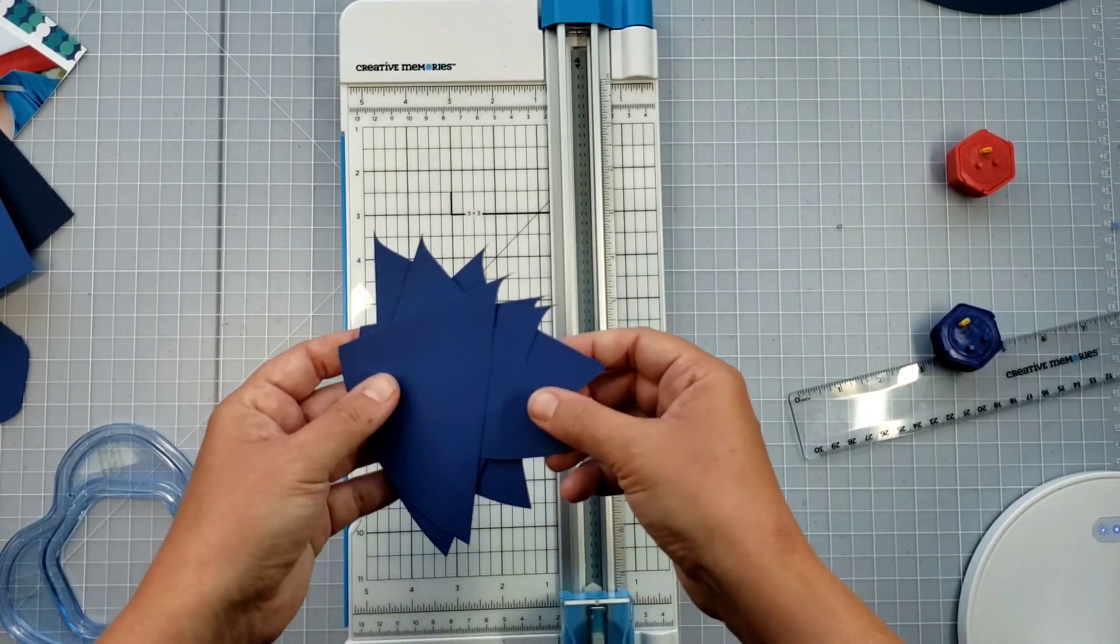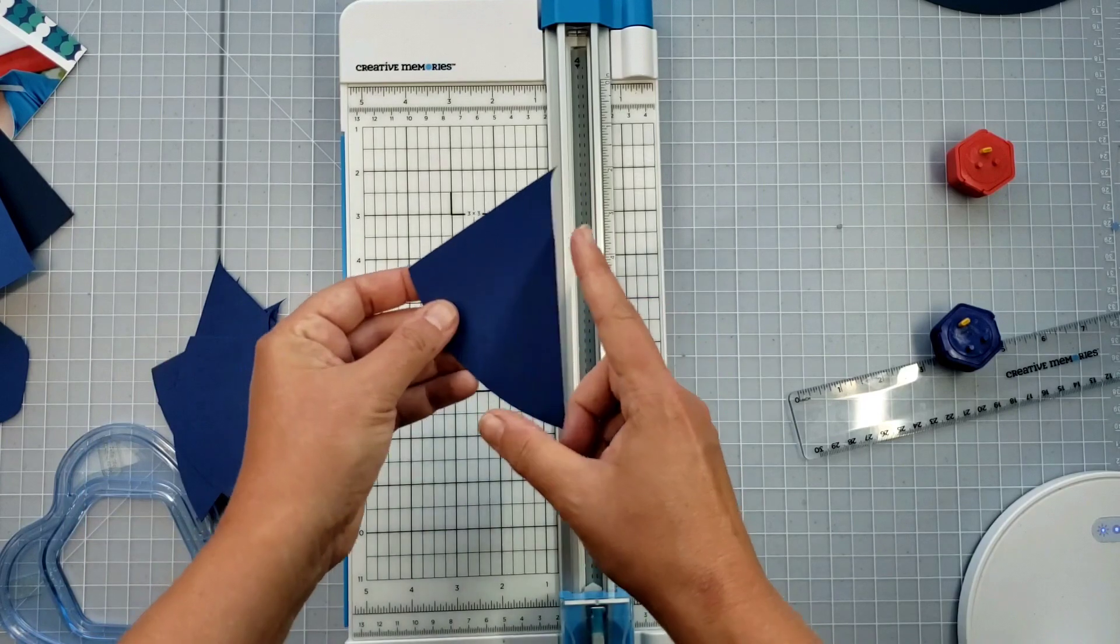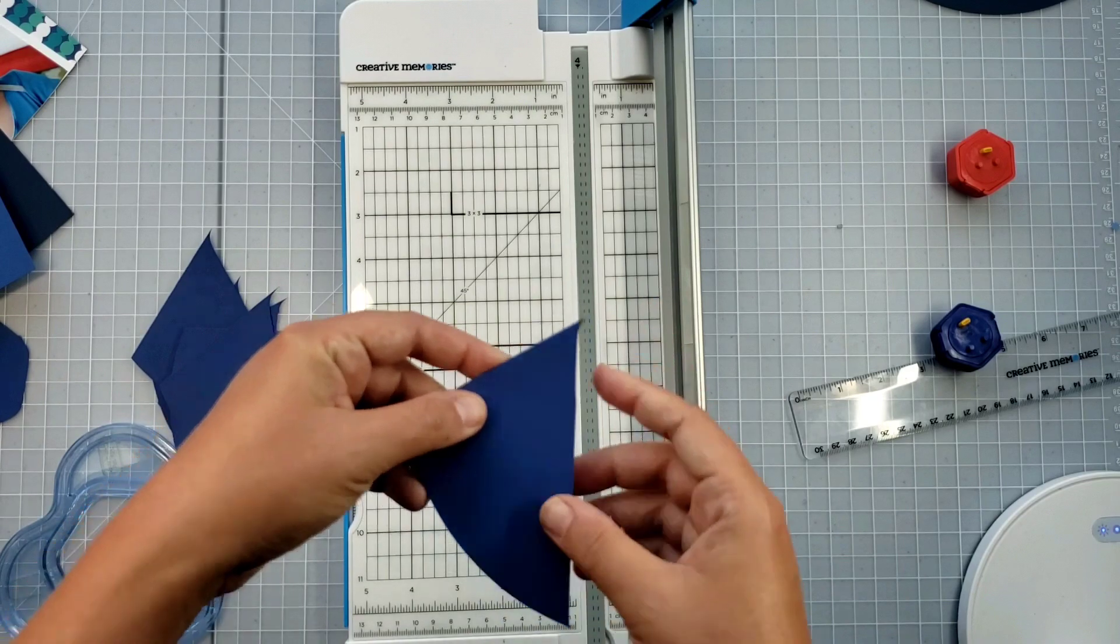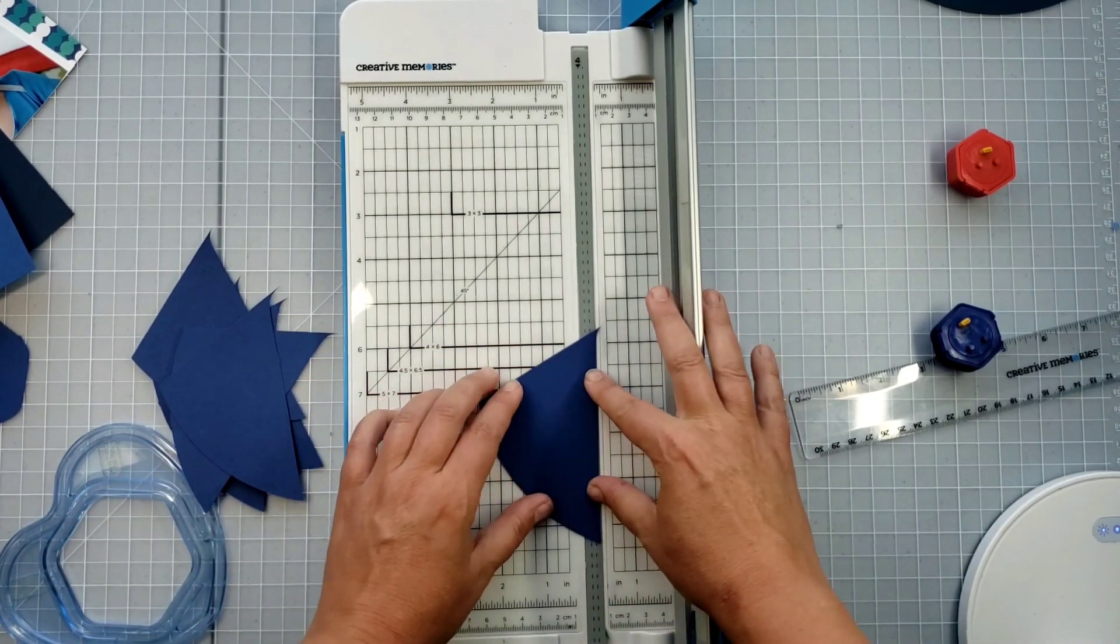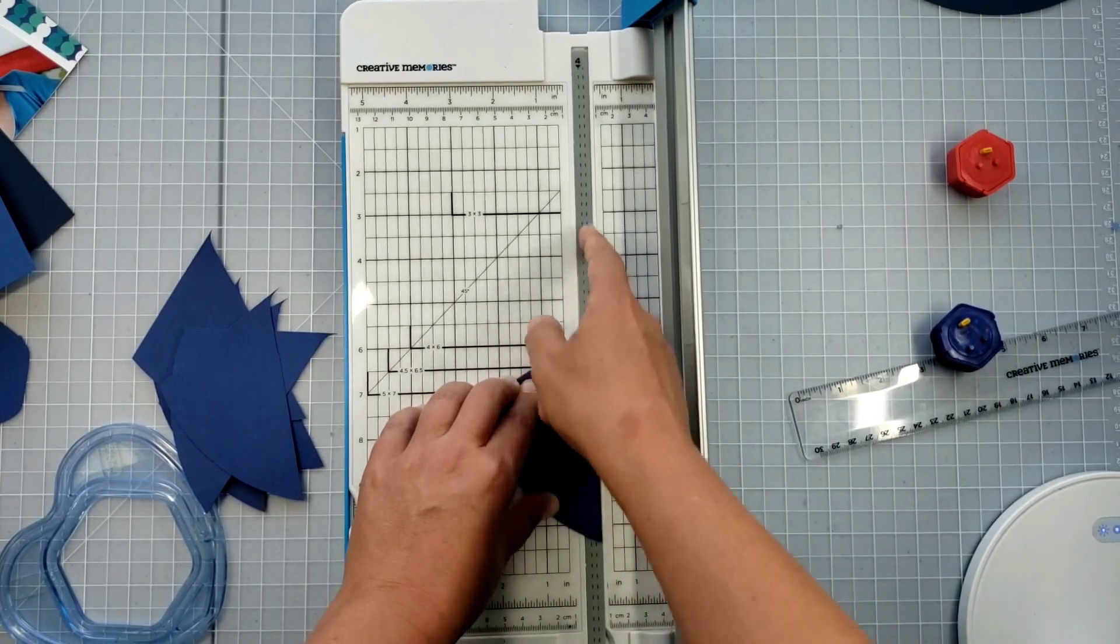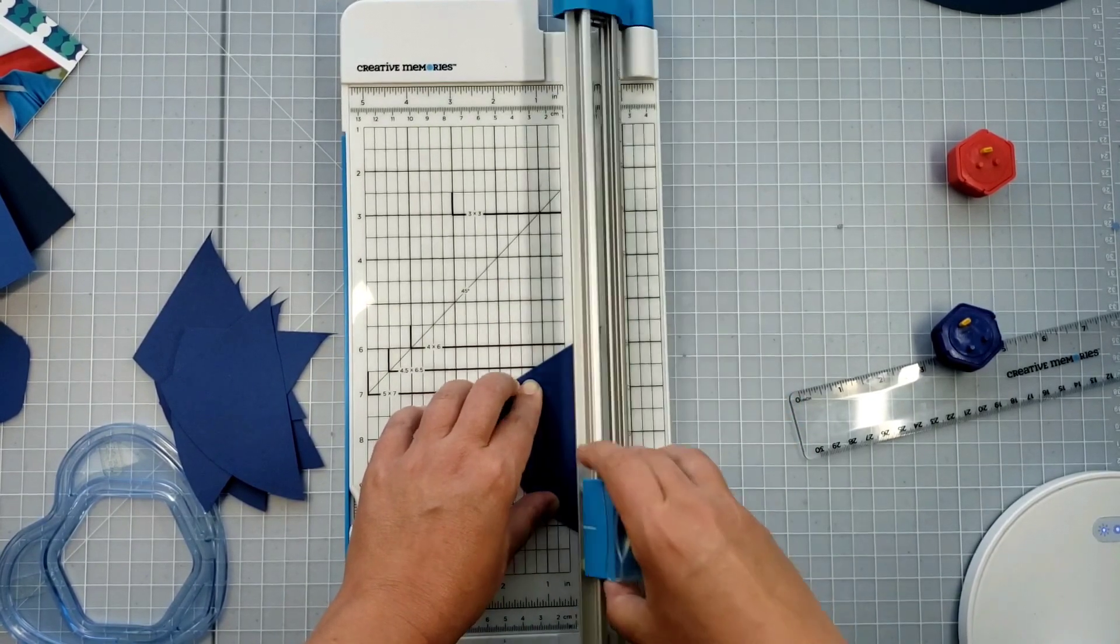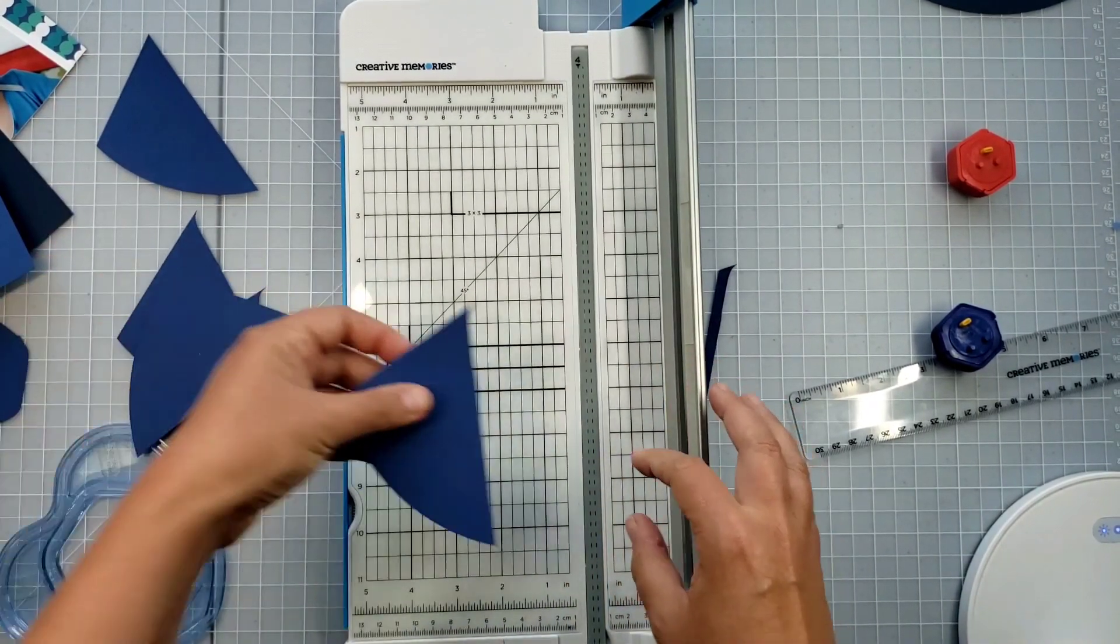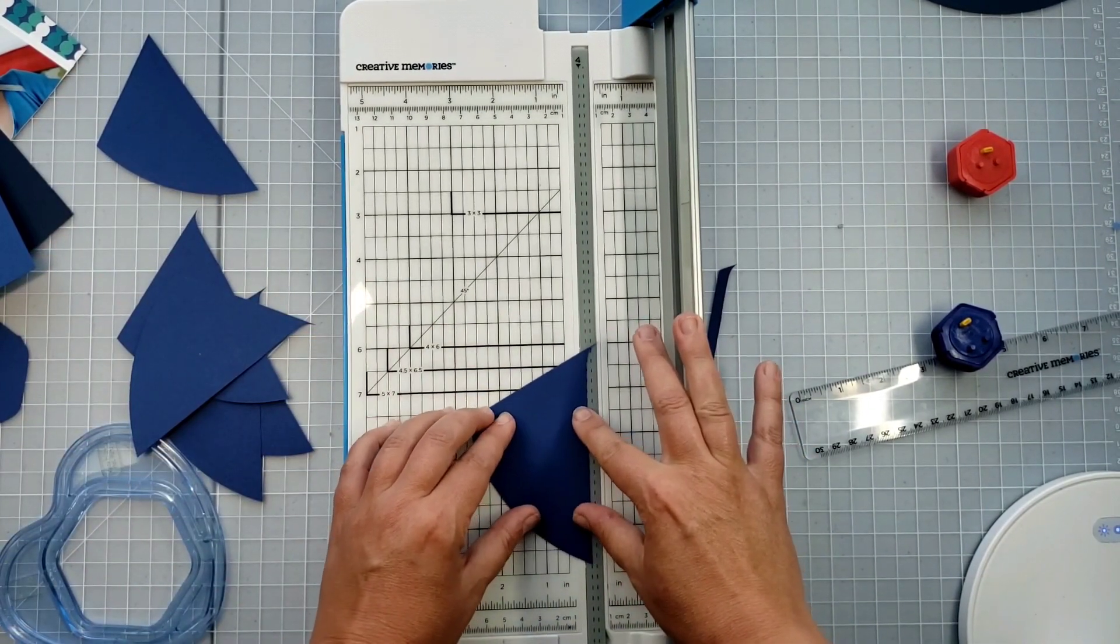The next step here is I'm going to trim a quarter inch off of the long edge. So you can see where it kind of curves in here. I'm going to trim that off. I'm going to trim a quarter inch off, which is going to about to the edge of that gray trim mat, and I'm going to do this on all six pieces.